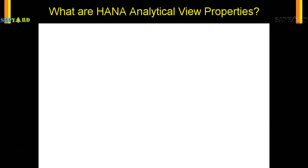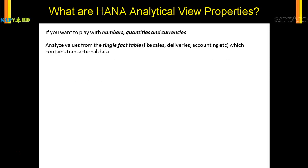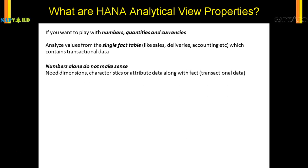Now let us understand what an analytical view is. If you want to play with numbers, quantities, and currencies, then analytical view should be your choice. GL amount $1000 or $110 is for analytical view. Similarly, PO quantity — say 10 each of value $4500 — is also for analytical view.